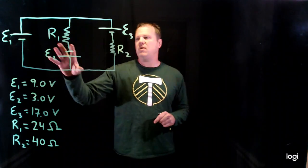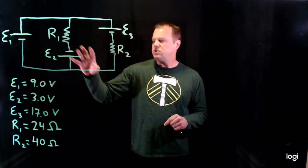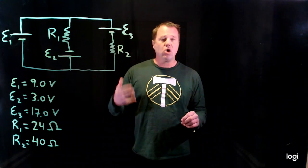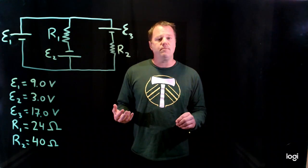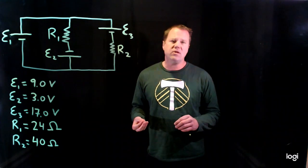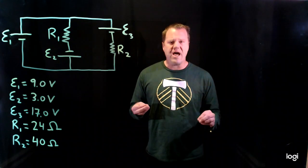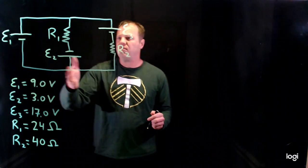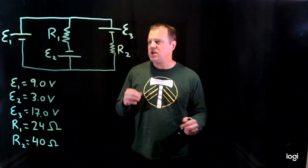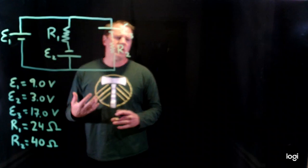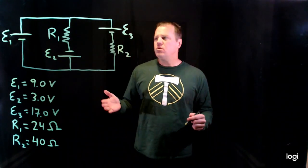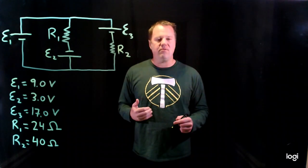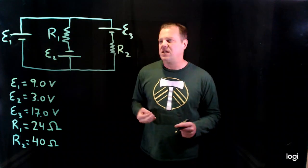Here's our circuit. We have three batteries and two resistors, all with known properties, and the goal is to predict the current through all of the circuit elements. The current direction is typically through the battery from the negative to the positive — out of the positive, into the negative outside the battery, and from the negative to the positive terminal inside the battery.